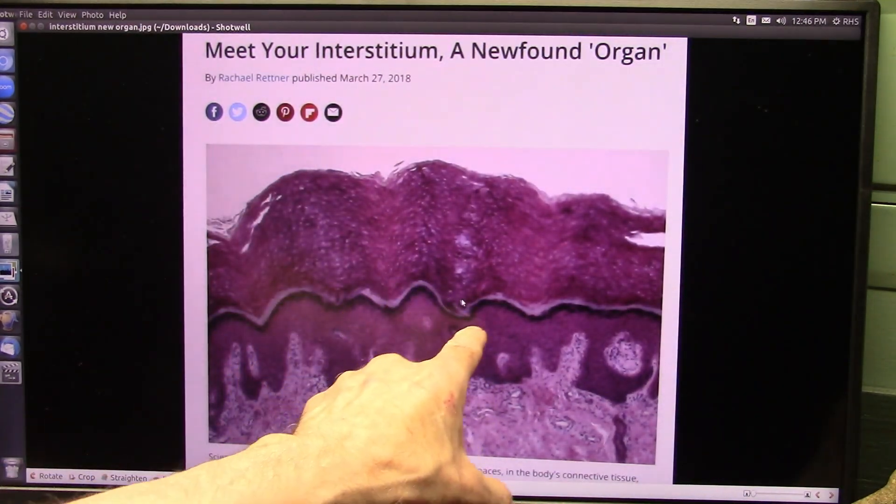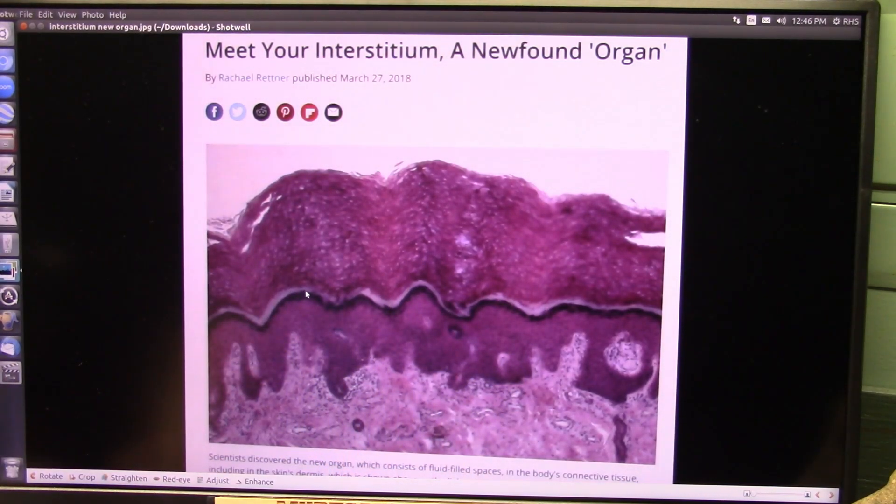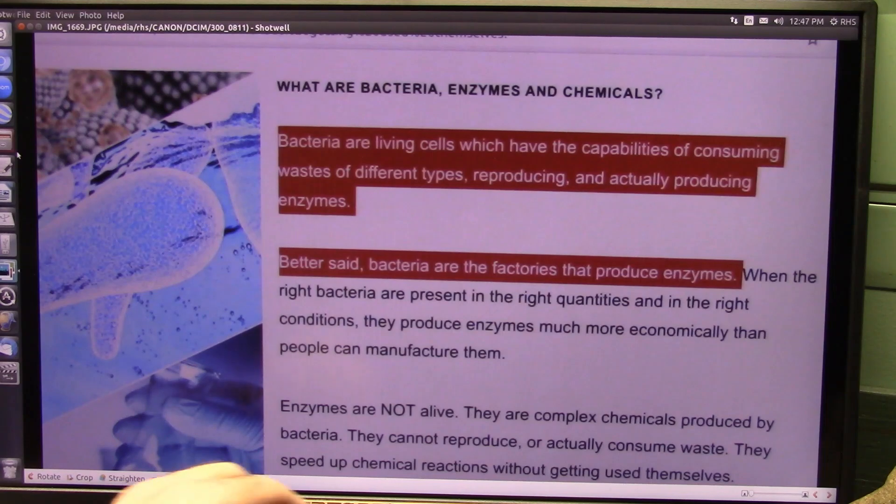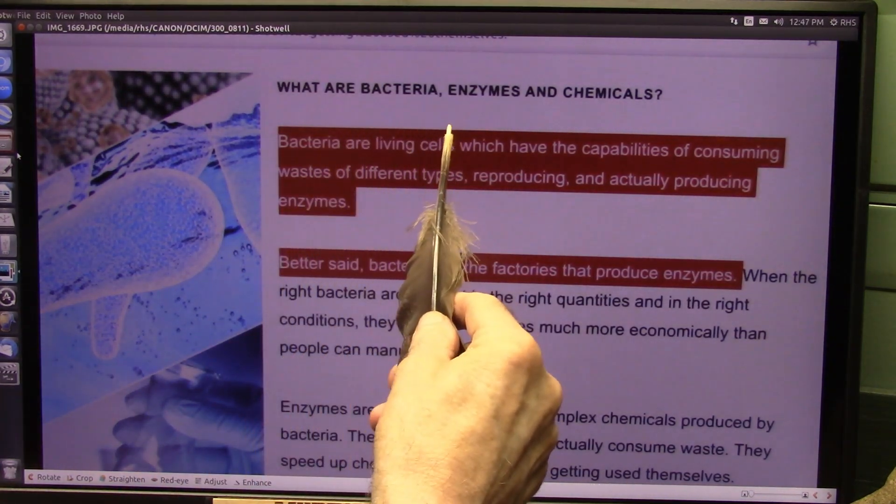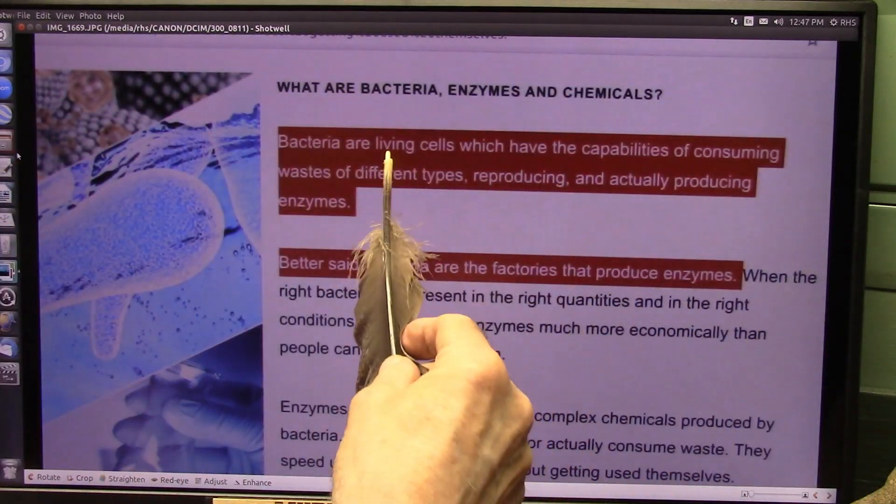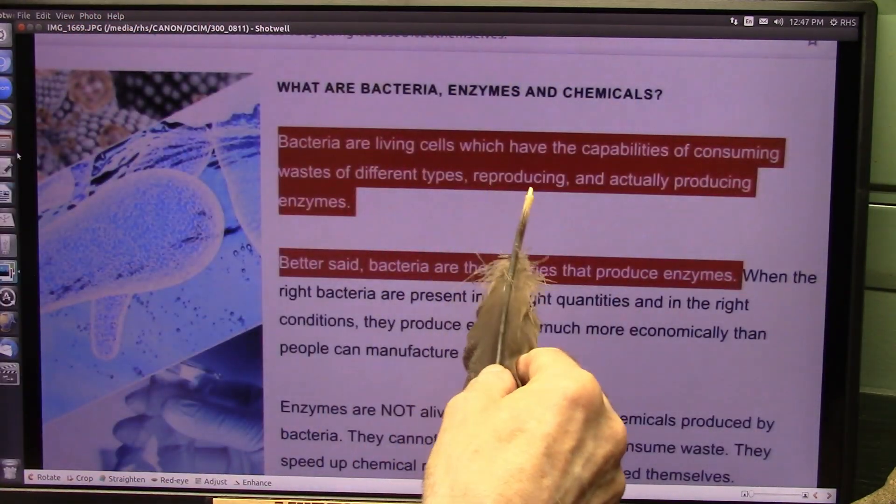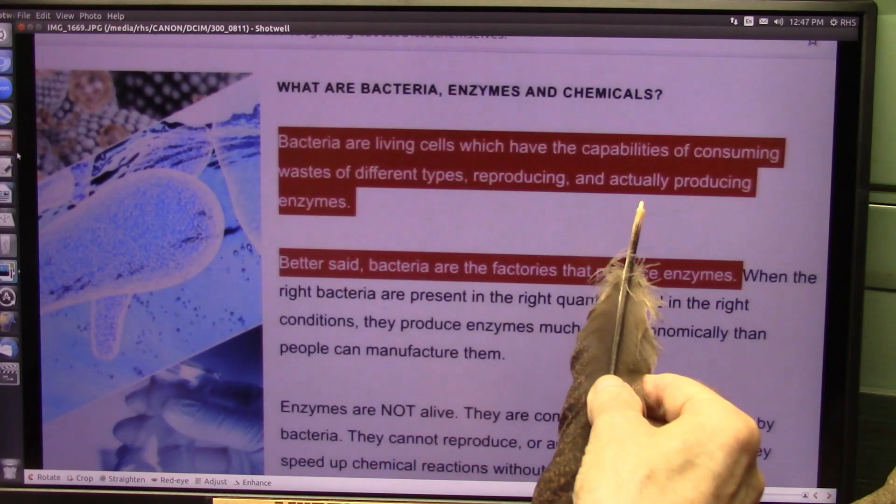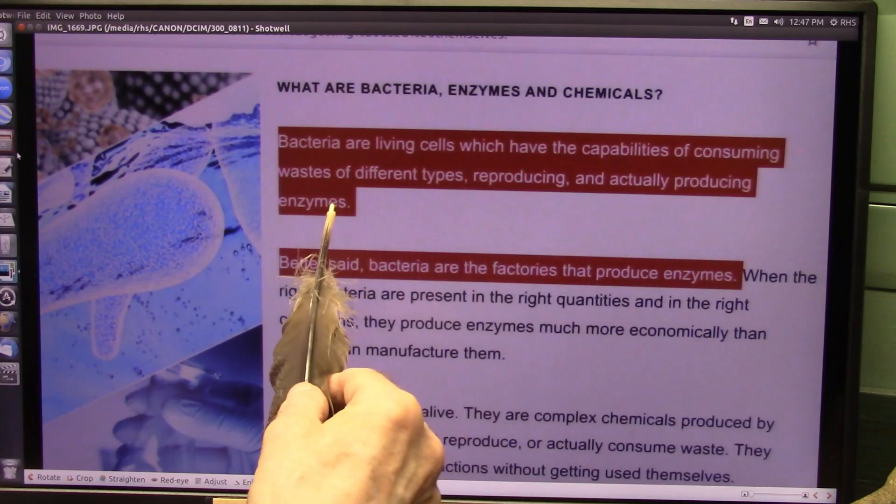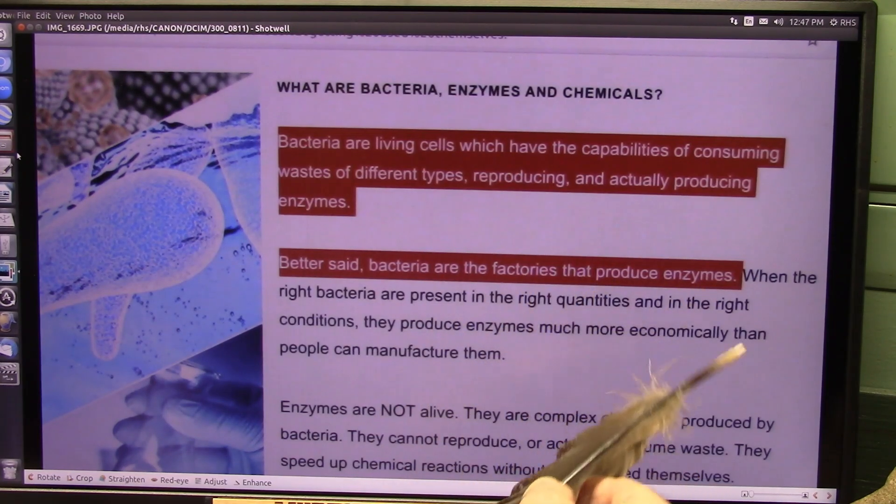But normally, you're not going to get through this layer if you have good enzymes floating around through there. And the only way you're going to have good enzymes is to have good bacteria that has the right programmer. And what programming is that, Roger? Well, I'm glad you asked. All right. This basically nutshells it. What are bacteria, enzymes, and chemicals? Bacteria are living cells. Those are those living cells with the little flagellas and stuff. They have the capability of consuming waste just to go out and gobble it up. They can reproduce all by themselves, so they just continue on in your body, and they actually produce enzymes. Whoa, that's the biggie. Better said, bacteria are the factories that produce enzymes.